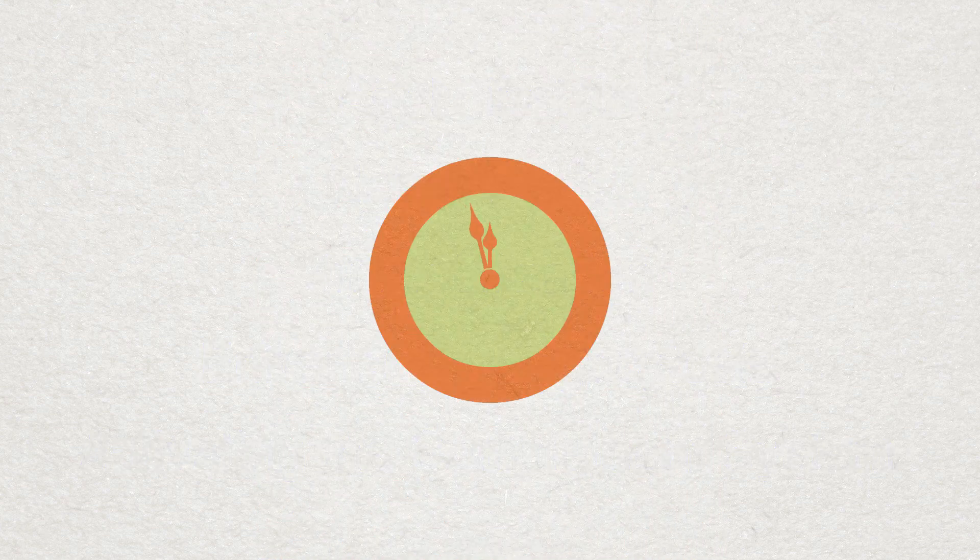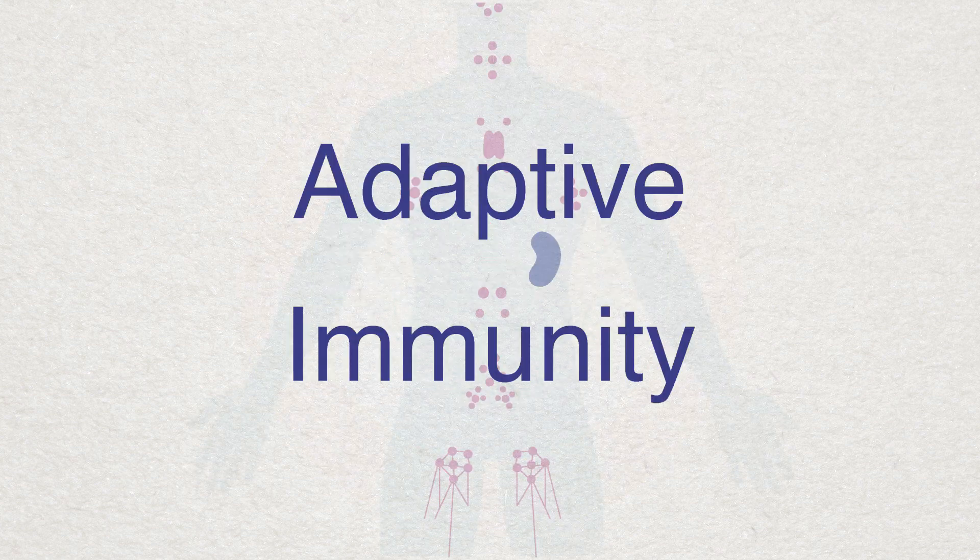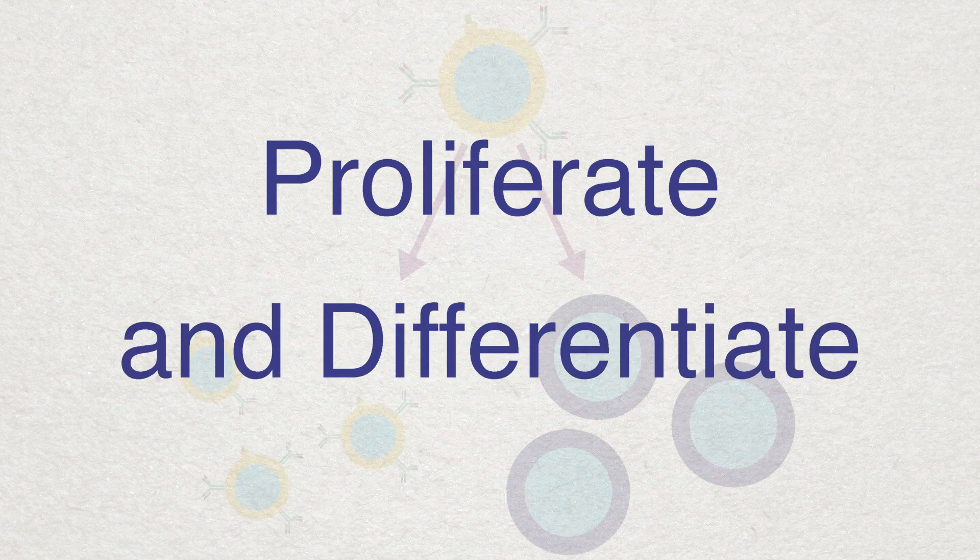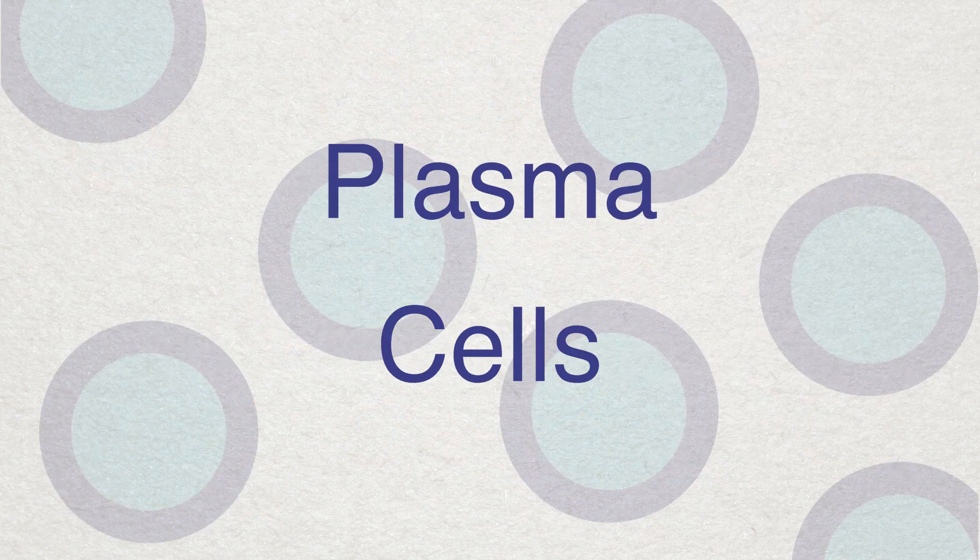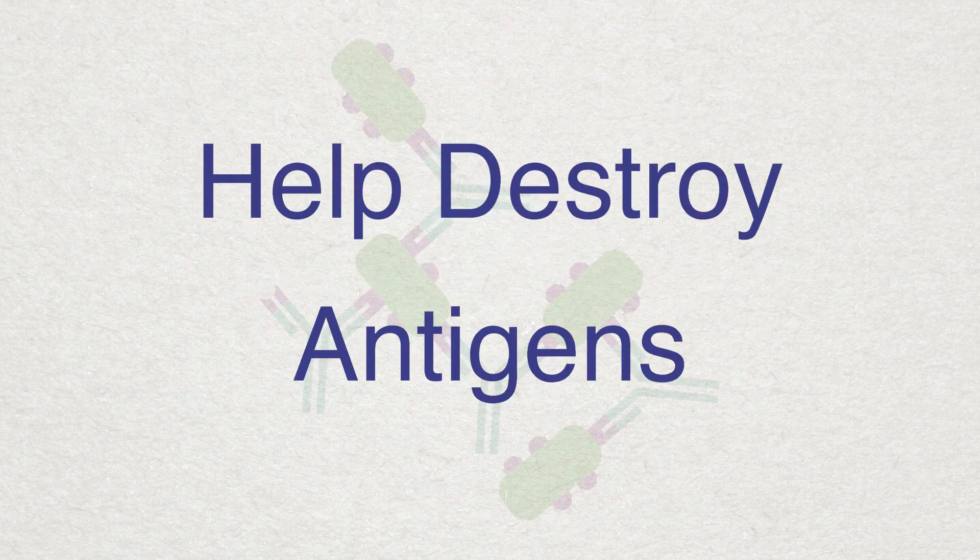It's getting close to midnight, so before the clock strikes 12, I'll recap. B-cells are key in adaptive immunity. They bind with antigens and proliferate and differentiate into memory B-cells and plasma cells. Plasma cells secrete antibodies, which help to ultimately destroy antigens.